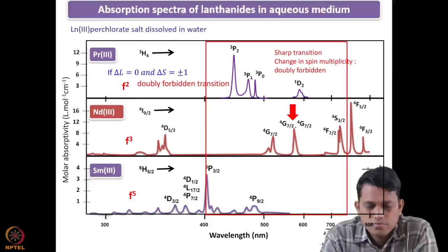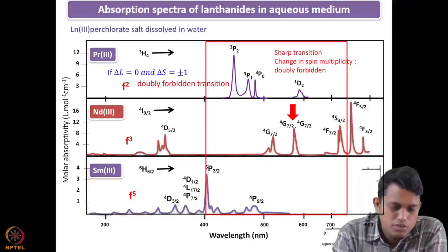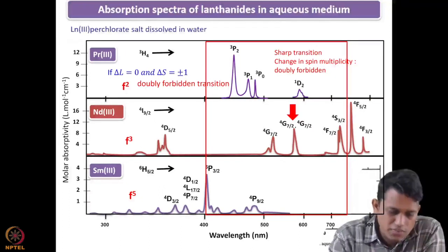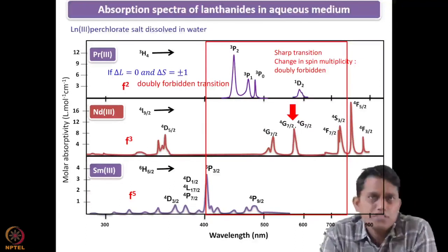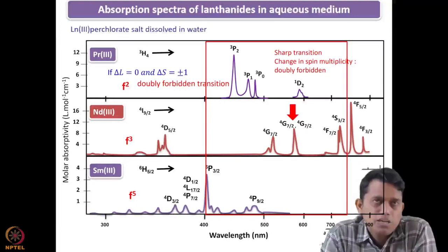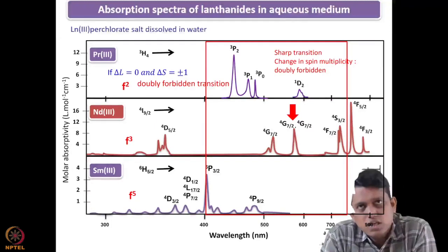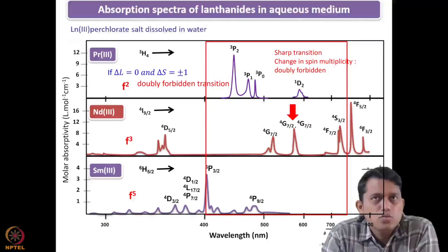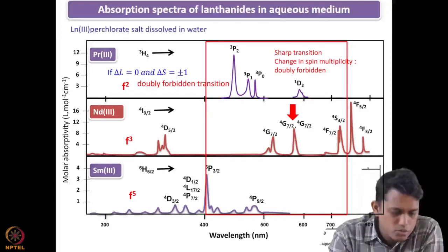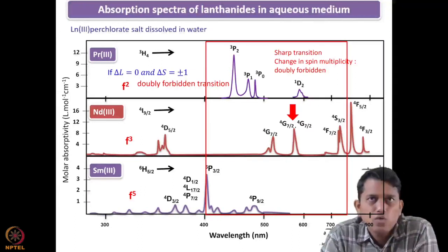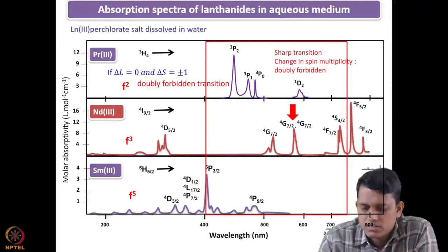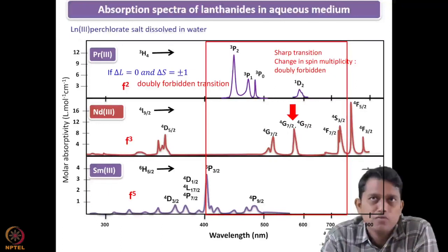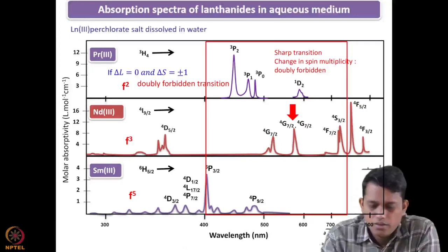This is the perchlorate salt spectra dissolved in aqueous medium. Starting from praseodymium, neodymium, and samarium — since both have f electrons they show mainly f-f or f-d transitions. The f-d transition is prominent in cerium, praseodymium, and terbium, while others are dominated by f-f transitions. One immediately noticeable feature is that the epsilon values are very low — less than 10 in many cases — because these are f-f transitions with Δl = 0, making them parity-forbidden.